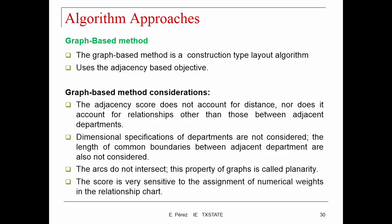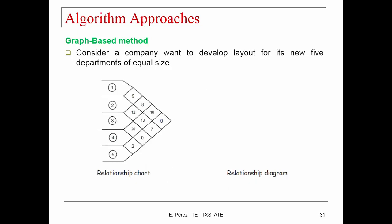Let's look at one example of the graph-based method. Consider a company that wants to develop a layout for its new five departments of equal size. We start with the relationship chart and can see the numbers representing the relationship between departments one through five. From there, we develop a relationship diagram by creating a network with nodes to represent each department: one, two, three, four, and five.